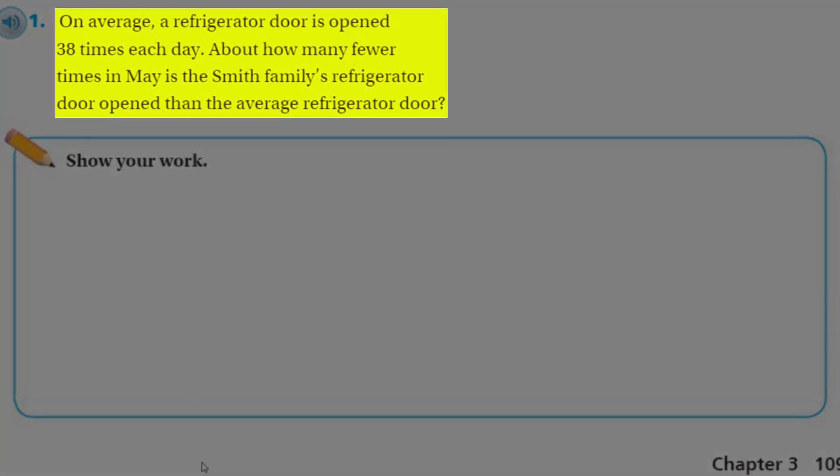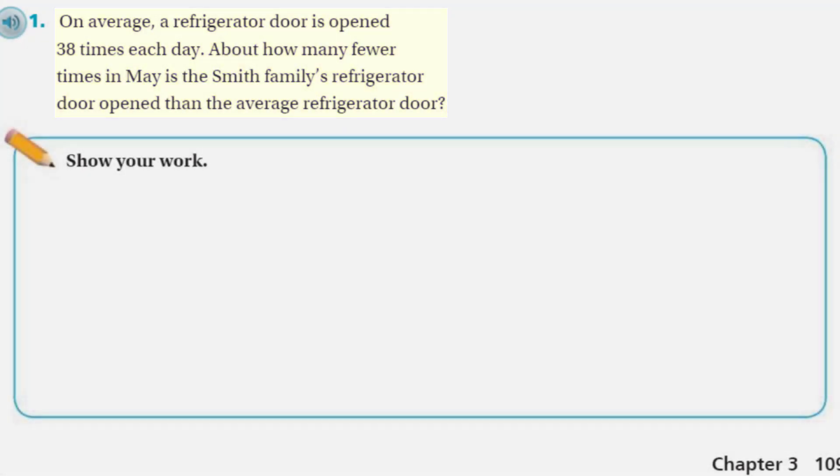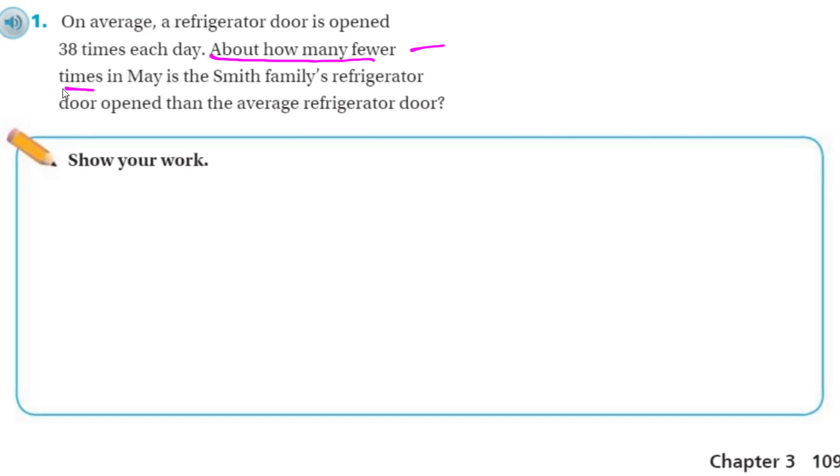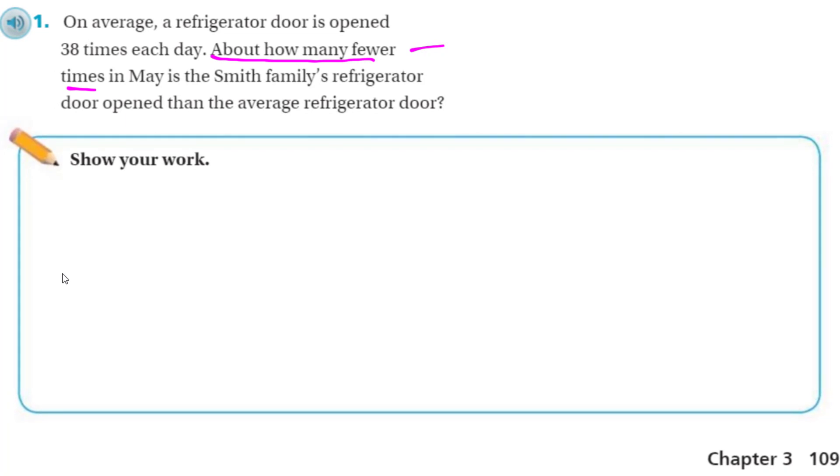Let's look at number 1 here. It says, on average, a refrigerator door is open 38 times each day. About how many fewer times in May is the Smith family's refrigerator door opened than the average refrigerator door? And of course, it says, show your work. Well, I'm looking at this problem thinking, the key word here was that about how many. About how many fewer times. So, this is going to be fewer.